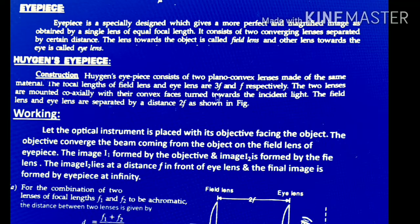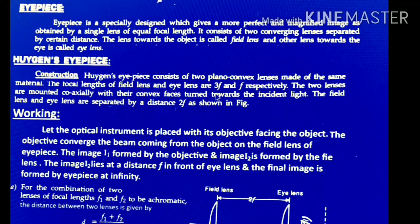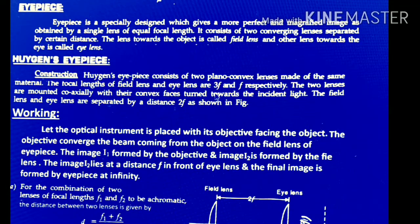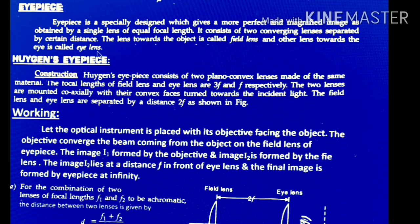What is the field lens? The lens towards the object is known as the field lens — the lens placed near the object. And similarly, the lens placed near the eye is known as the eye lens.